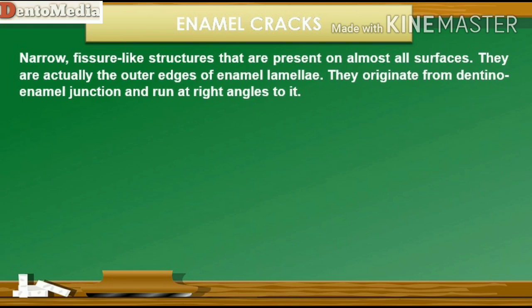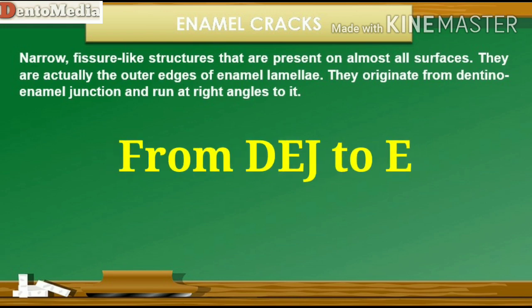Originally the term crack was used to describe the very narrow, fissure-like structures that are present on almost all surfaces. They are actually the outer edges of enamel lamellae, originating from the dentino-enamel junction and running at right angles to it.